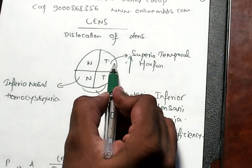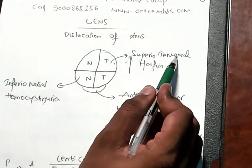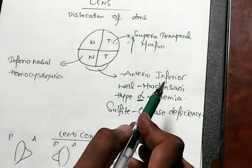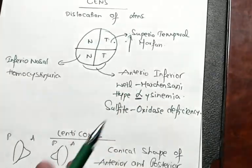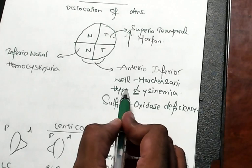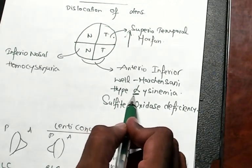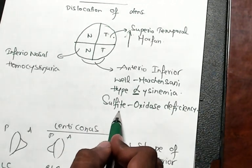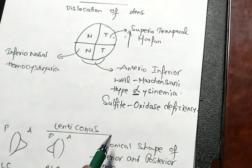Anteroinferior direction displacement: Weill-Marchesani, hyperlycenemia, sulfite oxidase deficiency. All these things are anteroinferior is something which you should not forget.